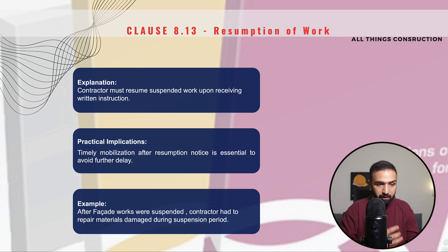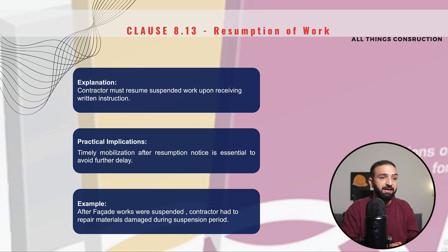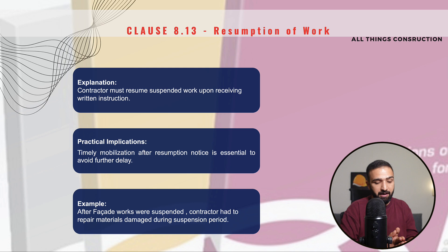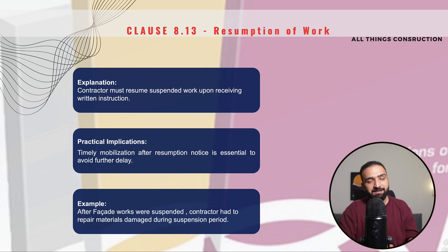In this inspection, for example, if the engineer finds that some elements of the facade were damaged during the suspended period, we contractors will have to rectify and make good these materials at our own cost. With that being said, this completes section 8 of the FIDIC Red Book. We will come back with a lecture on section 9 very soon — until then, take care of yourselves. Happy building!